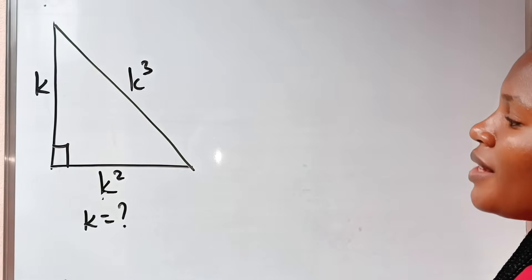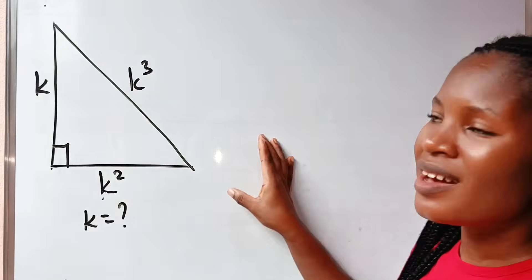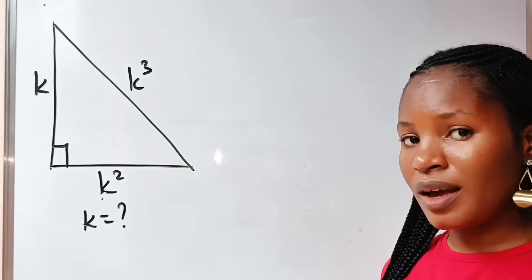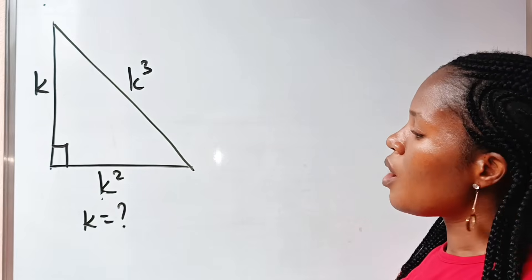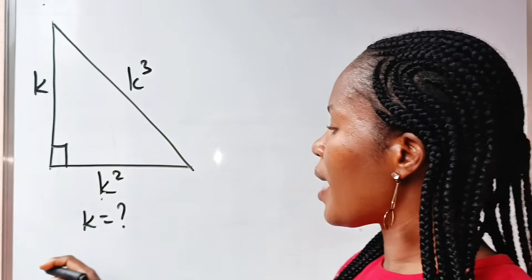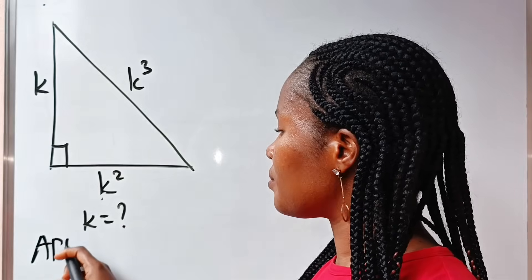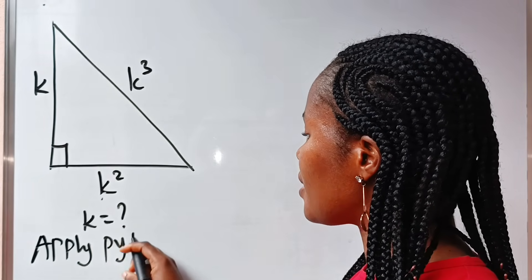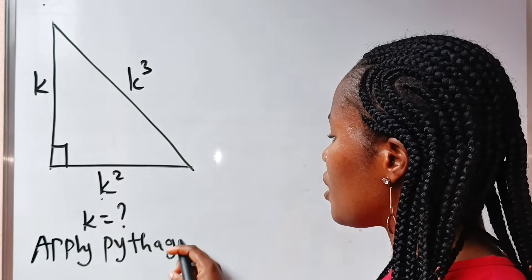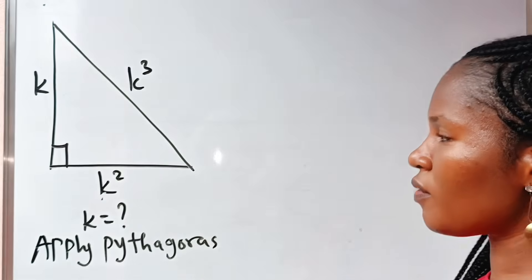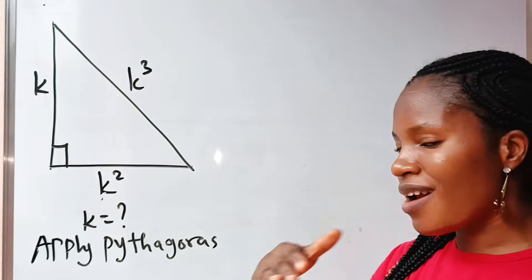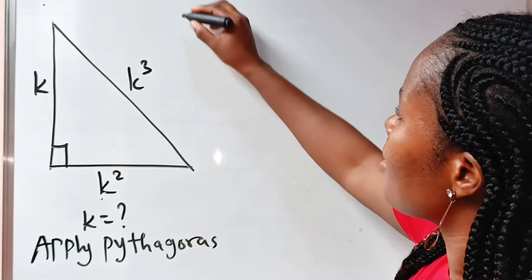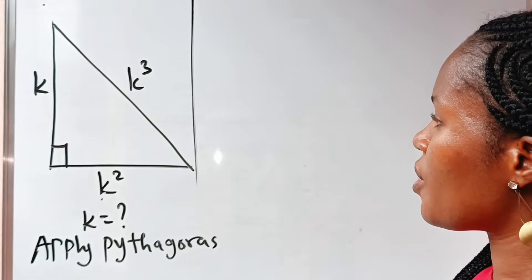First, being that this is a right-angled triangle, this is telling us the first step we need to take. And what is that first step? We are going to apply the Pythagorean theorem. They wouldn't have given us a right-angled triangle if we weren't supposed to. So let's apply the Pythagorean theorem.